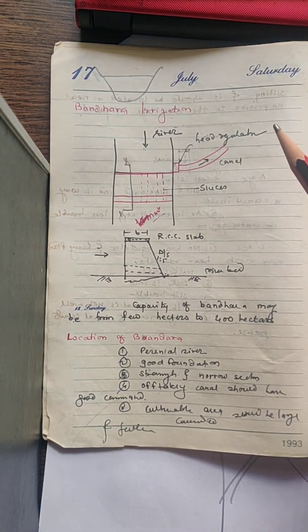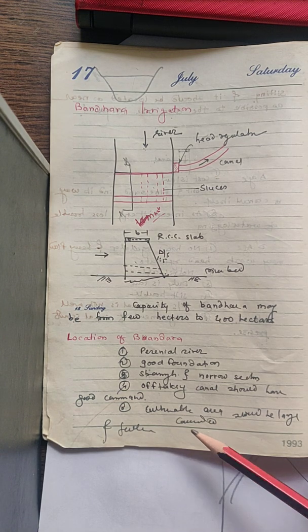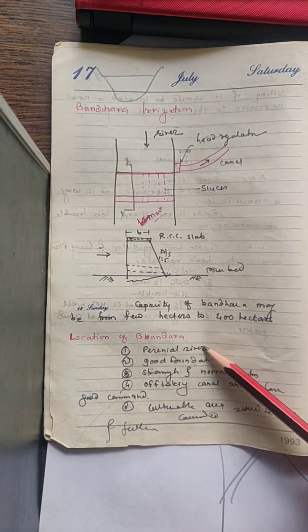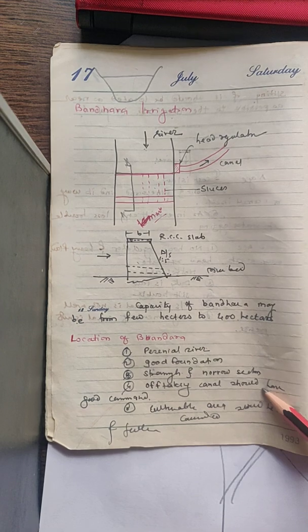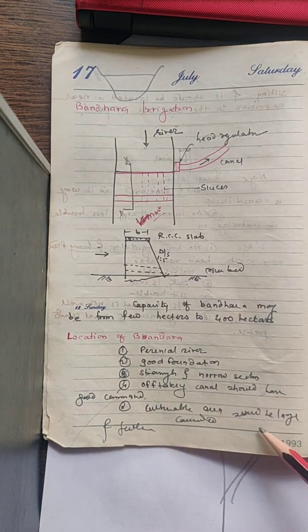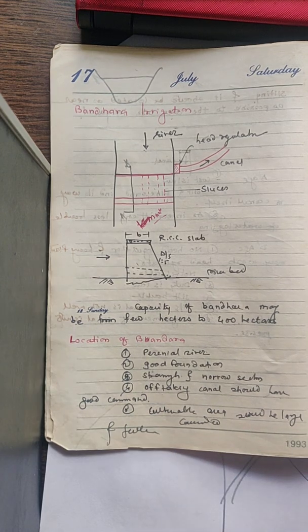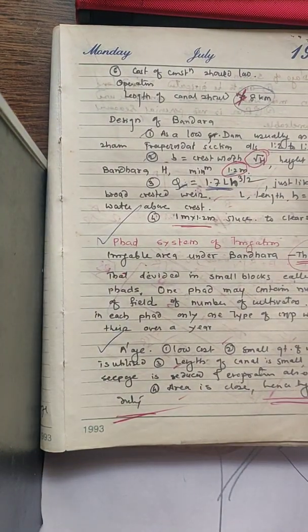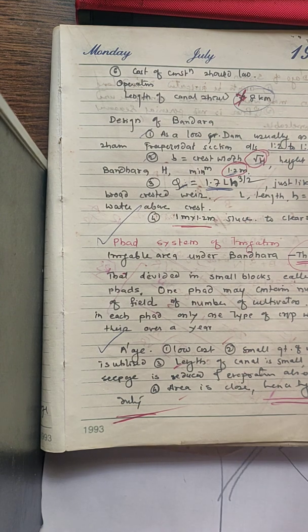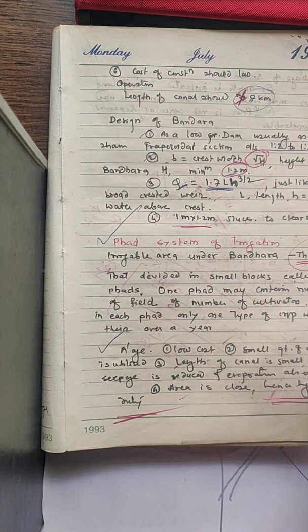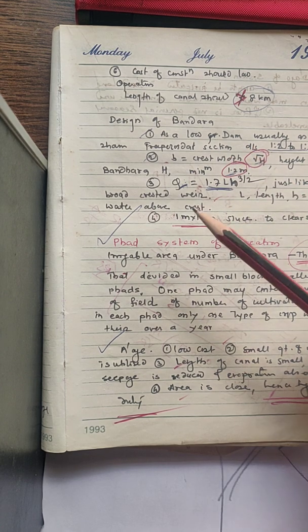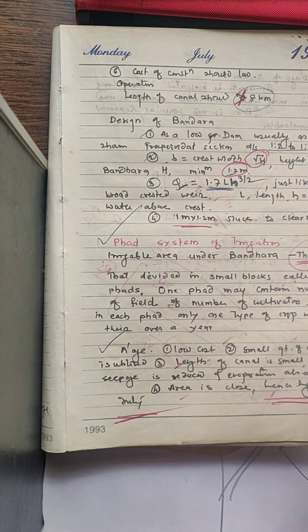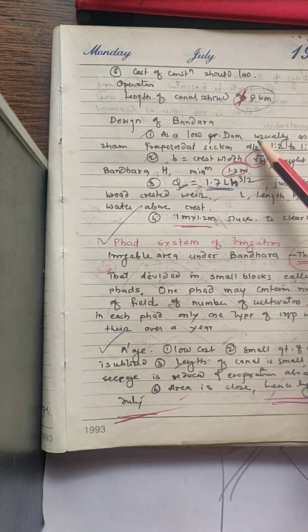These are constructed on a perennial river with a good foundation. The offtaking canal should have good command, the cultural area should be large, and the cost of construction is low. Normally the length of canal is not more than eight kilometers. The bandara is designed as a low gravity dam — we calculate all forces, then check for stability, overturning, sliding, crushing, and tension. The same design procedure as for a gravity dam is followed.